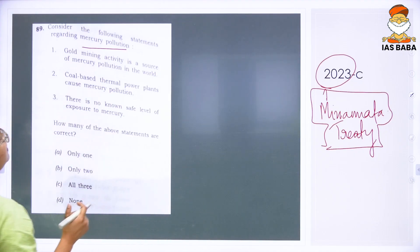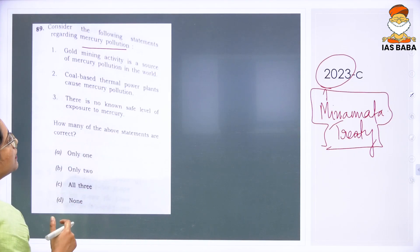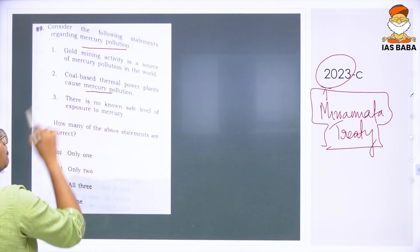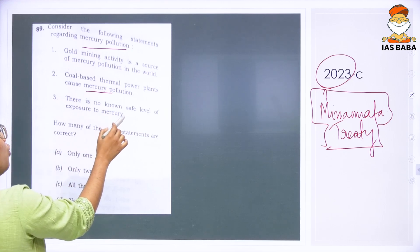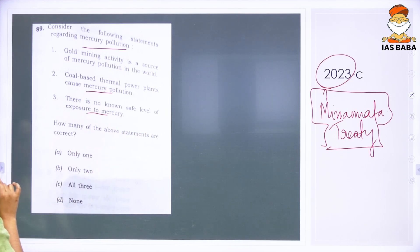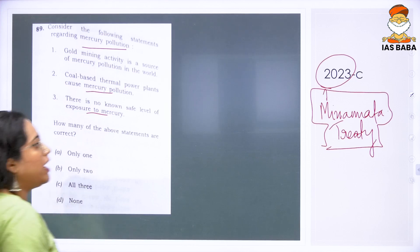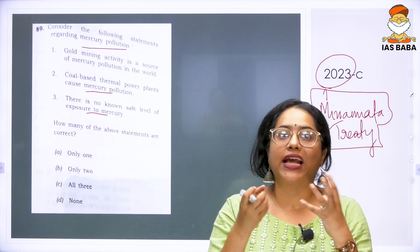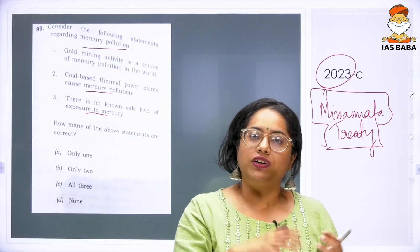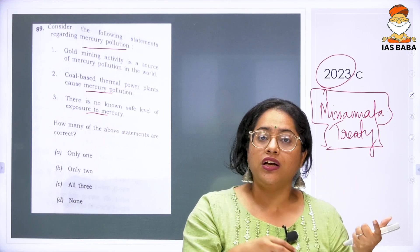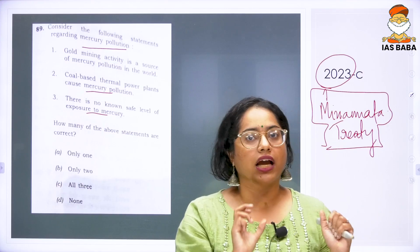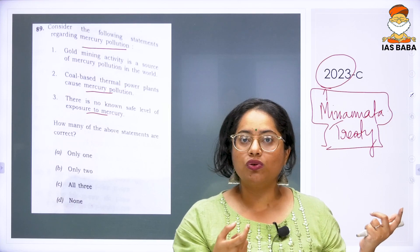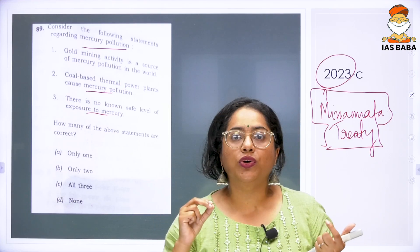The question reads: consider the following statements regarding mercury pollution. One — gold mining activity is a source of mercury pollution in the world. Two — coal-based thermal power plants cause mercury pollution. Three — there is no known safe level of exposure to mercury. When it comes to mercury extraction, whenever you extract gold, mercury is used as a catalyst in that process, causing mercury pollution from gold mining.